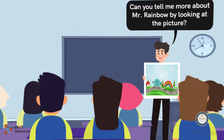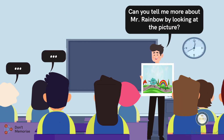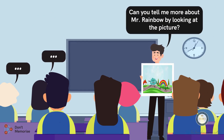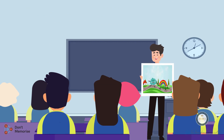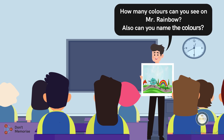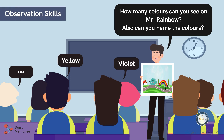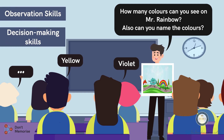Ask the students if they can tell more about Mr. Rainbow by looking at the picture. Accept all possible responses from them. Once the students have finished responding, ask them how many colors they can see on Mr. Rainbow, and if they can name the colors as well. Allow the students to observe and respond, as this will develop their observation as well as decision-making skills.